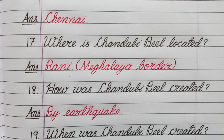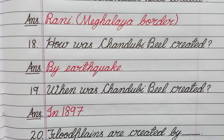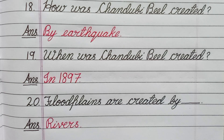Question number eighteen: How was Sandubi bill created? Answer: By earthquake. Question number nineteen: When was Sandubi bill created? Answer: In 1897. Question number twenty: Floodplains are created by what? Answer: Rivers.